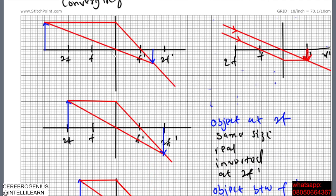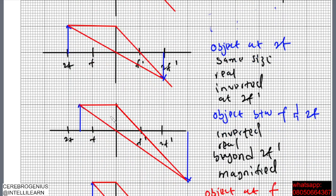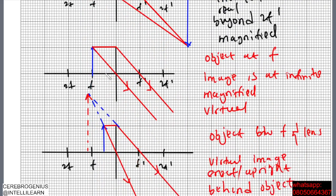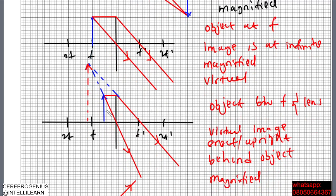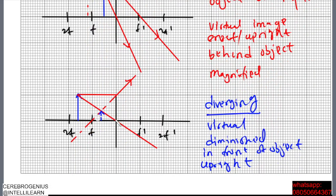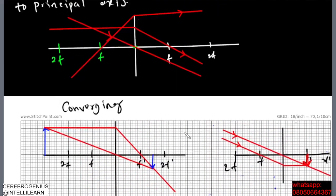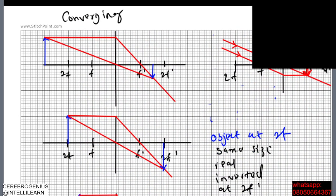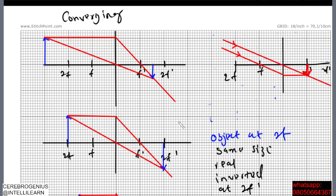You can also use distances to determine magnification. When the object distance is very large compared to the image distance, the image is diminished. When the distances are equal, the sizes are equal. When the image distance is larger than the object distance, the image is magnified. This helps you compare when you will form a magnified or diminished image.